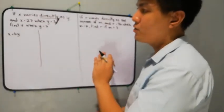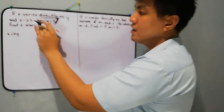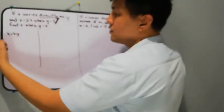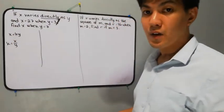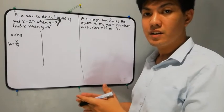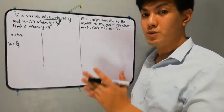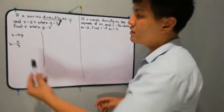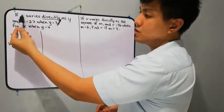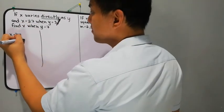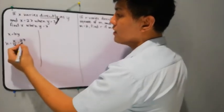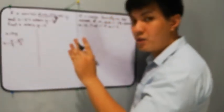Let's solve for the constant. X varies directly as y, so x is equal to 27 and y is equal to 3. The formula for the constant is k is equal to x over y. In direct variation, we divide to find the constant. Since x came first in the statement, the numerator will be the x value and the denominator will be the y value.